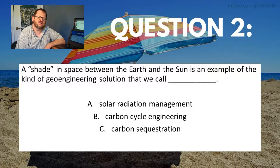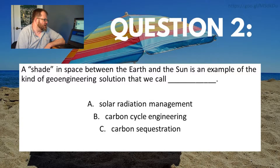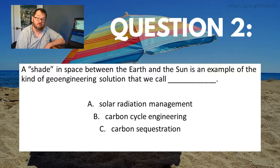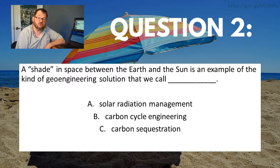All right, here's a second question, and I think this one will be a little bit easier because it's more of a vocabulary question. A shade in space between the Earth and the sun is an example of a kind of geoengineering solution that we call: A, solar radiation management; B, carbon cycle engineering; or C, carbon sequestration.